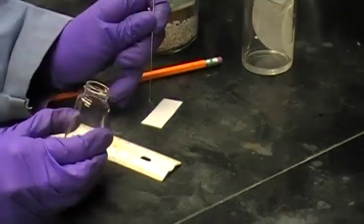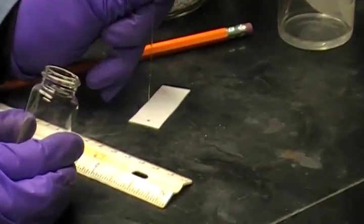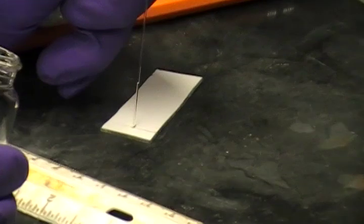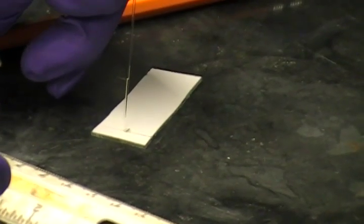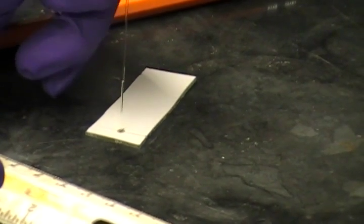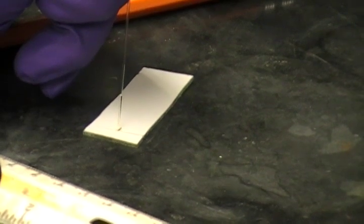Now we use a TLC spotter to transfer our desired sample onto the plate. The capillary action draws our sample into the TLC spotter. We lightly tap the spotter onto the plate to make the smallest spot possible. If your sample is concentrated, one spot will be sufficient.